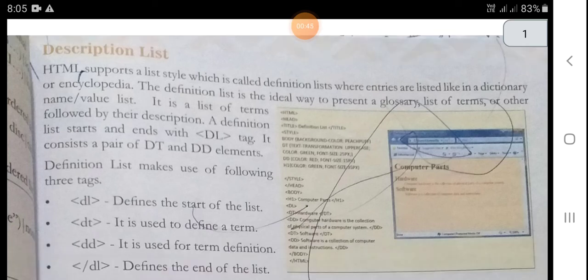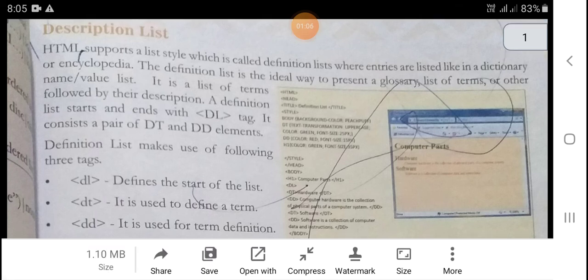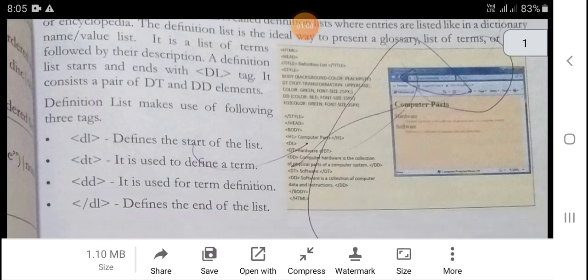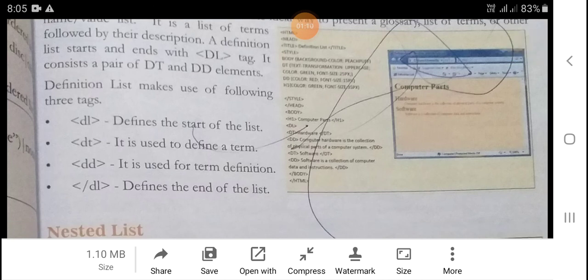Here is a definition for every term. Our definition list starts and ends with a DL tag. It consists of a pair of DT and DD elements.